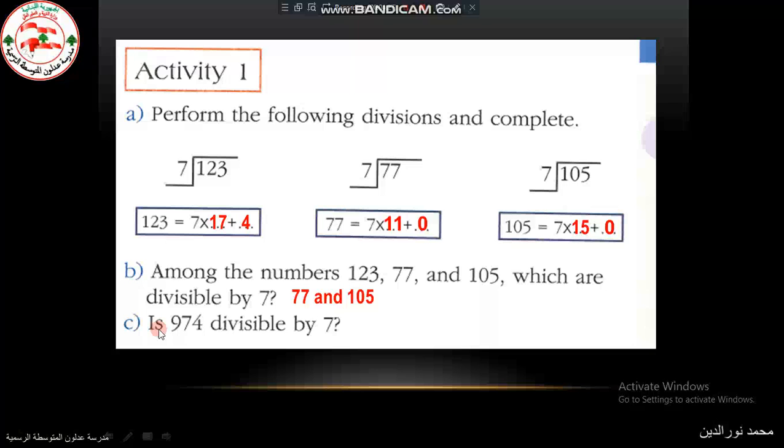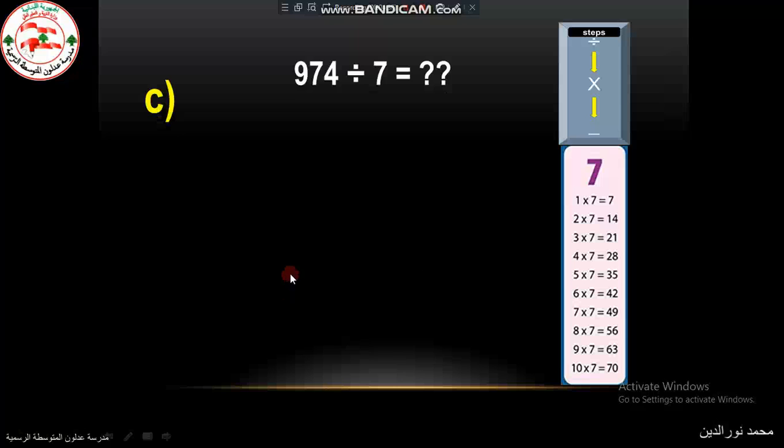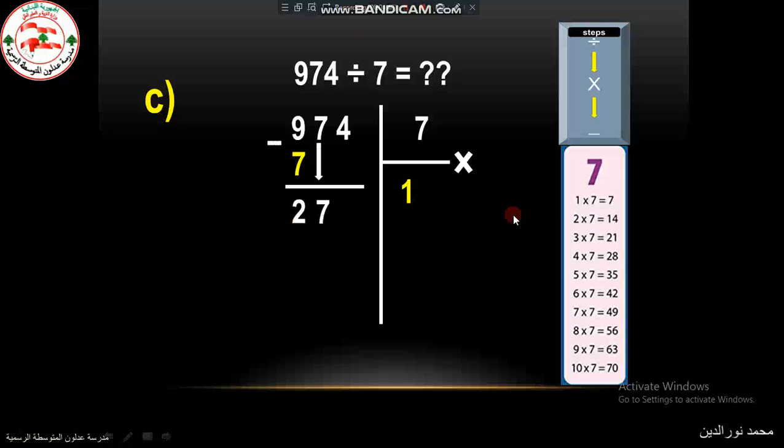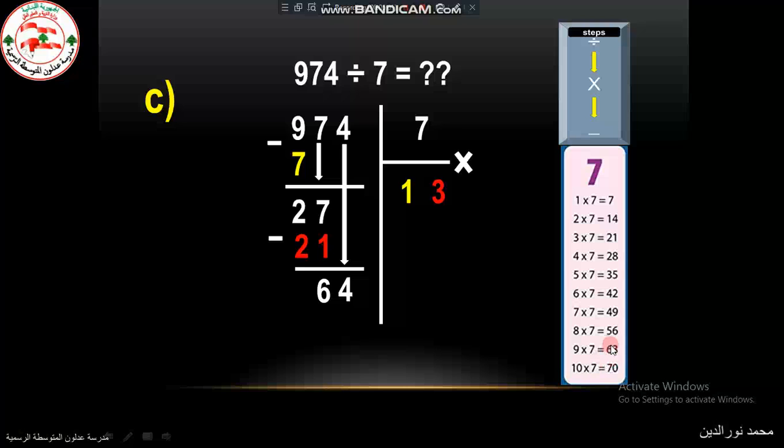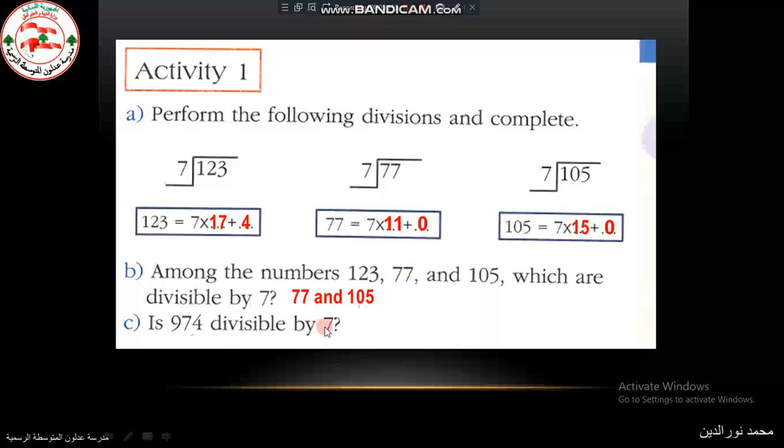C is asking, is 974 divisible by 7? So we have to make the division operation. 974 divided by 7. We start from left. 9 minus 7 is 2. Drop this 7. 27. Here 27, so we take 3 times 7. 3 times 7, 21. 6. And we drop 4. 64. 64 is here, so we take 9 times 7. 9 times 7 is 63. And the remainder is 1. So is it divisible by 7? No. Why? Since the remainder is not 0.